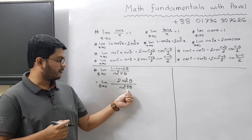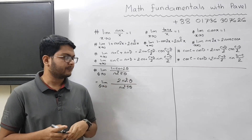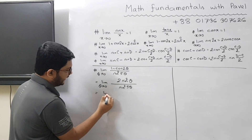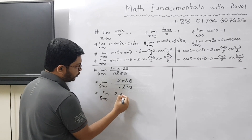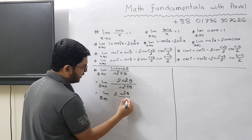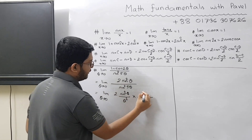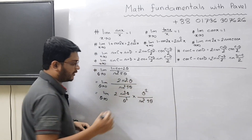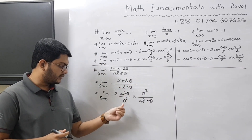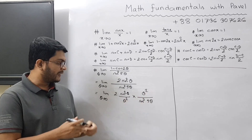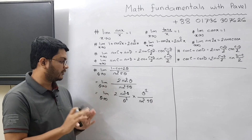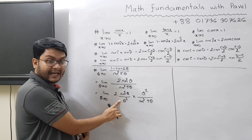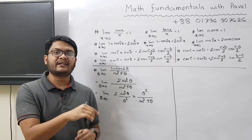The problem here is that we have 5 theta in the denominator and only theta in the numerator, so we need to adjust that. What we can do is write 2 sin square theta divided by theta square, multiplied by theta square divided by sin square 5 theta. We can write that because the theta square terms cancel out to give back the previous line. We do this in order to adjust the values so that in the next line we can write this as sin theta divided by theta, whole square.